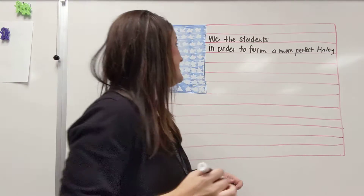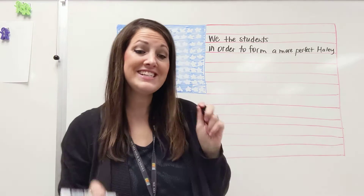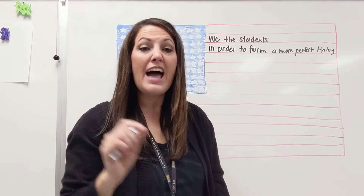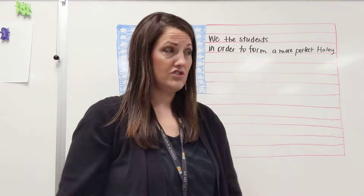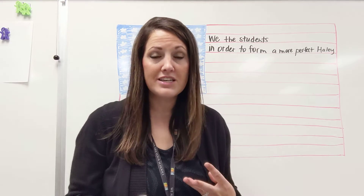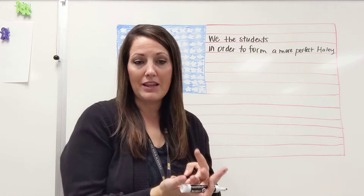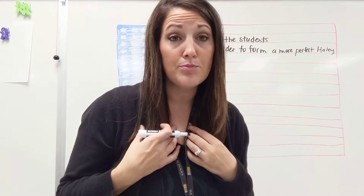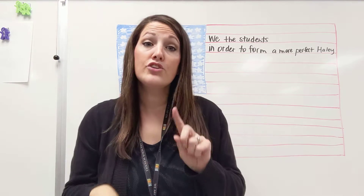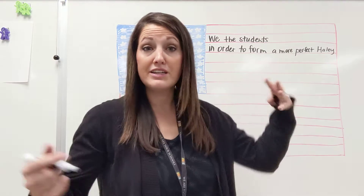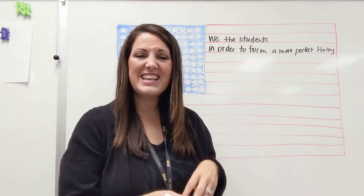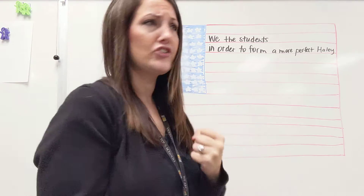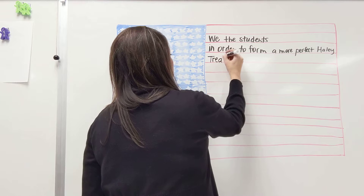Now the next line in the real one is establish justice. Justice means like fairness, so we're going to put fairness in place because we want people to be treated fairly. I want to be treated fairly, and as a student, you want to be treated fairly — getting a fair amount of work, graded fairly, getting the same opportunities as everybody. So instead of saying establish justice, it really means fairness, so we're going to say: we treat people fairly.